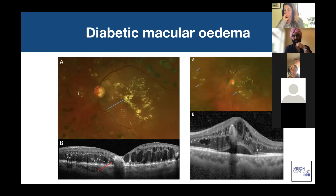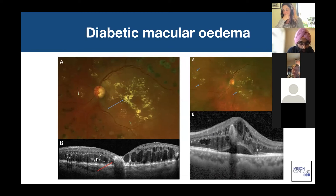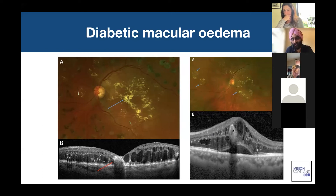These OCT images show diabetic macular edema. You can see small hyperreflective blobs — microaneurysms forming within the retina — cystic accumulations, and exudation causing masking of the underlying retina. It's not uncommon to have both intraretinal cysts and subretinal fluid accumulating. Both intraretinal and subretinal fluid respond really well to intravitreal anti-VEGF agents.